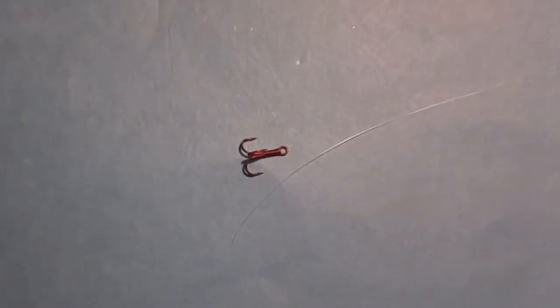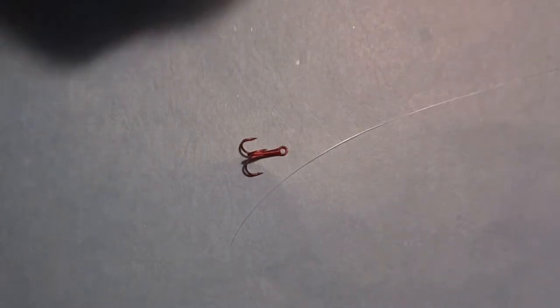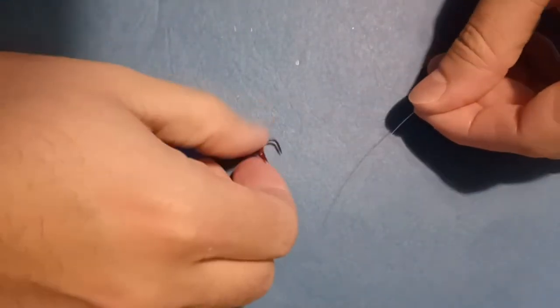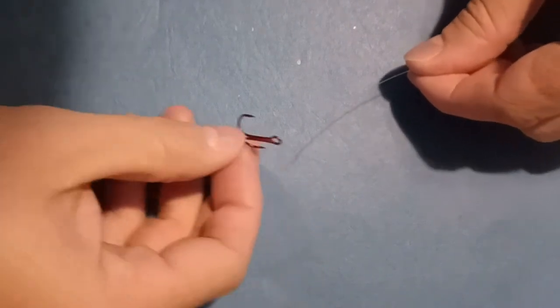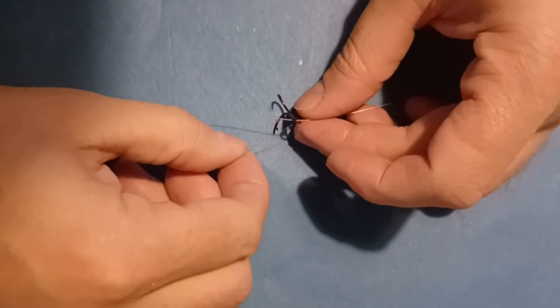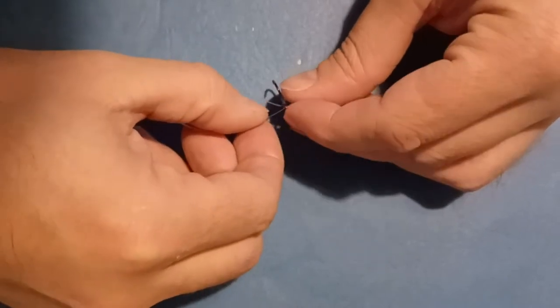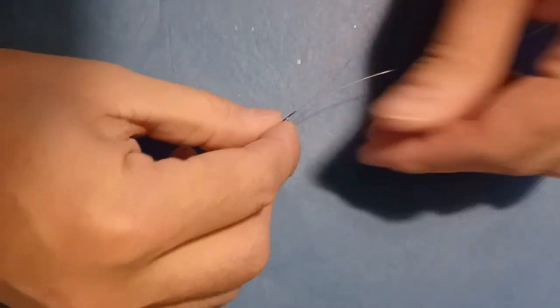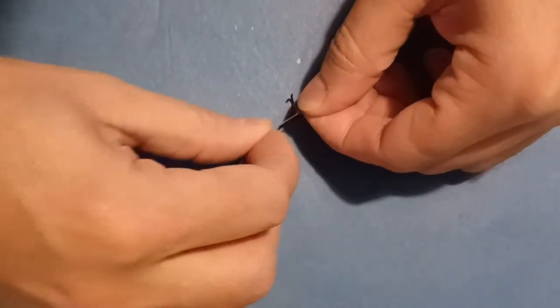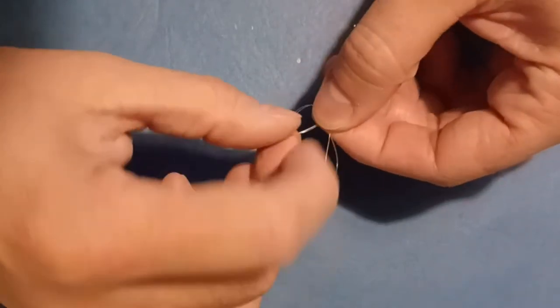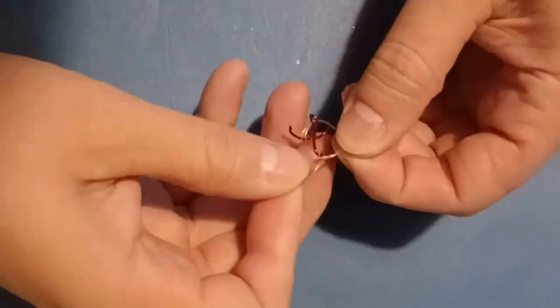And so the very first thing that I do is I tie a simple palomar knot to the treble hook. And I'm not going to go through the ins and outs of tying a palomar knot. There's probably a million really good YouTube videos on how to tie a palomar knot. And so that is the knot that I use to go to the treble. So we'll fast forward through this just a little bit.